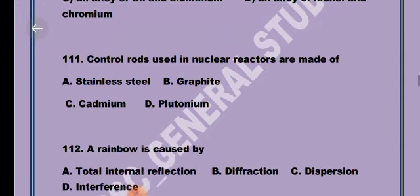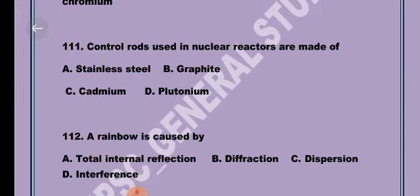Question 11. Control rods used in nuclear reactors are made of Option C, Cadmium.